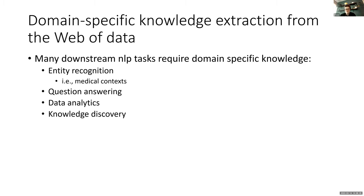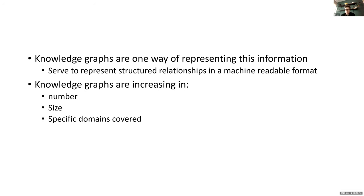The main idea is that many different downstream NLP tasks require domain-specific knowledge. For example, what constitutes an entity means different things in different contexts — an entity in a medical setting differs from one in a fiction novel. This is also relevant for question answering, data analytics applications, and knowledge discovery. Knowledge graphs are one way to represent this information as structured relationships in a machine-readable format.